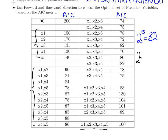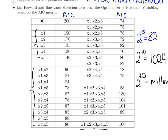Just as a remark, if there were 10 predictor variables, you would have 1024 possible models. And if you had 20 predictor variables, we're talking in the millions. So five is manageable, but very quickly you'd get into millions of possible combinations.